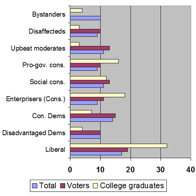The Pew study divided conservatives into four groups: enterprisers, social conservatives, pro-government conservatives, and conservative Democrats. Conservative Democrats were the most common typological group at 14% of respondents, while enterprisers and pro-government conservatives were the least common at 9%. Enterprisers had the second-highest percentage of college graduates behind liberals and were tied with liberals on household incomes of $75,000 or more. All conservative demographics were religious, with less than 10% identifying as secular, compared to 22% among liberals.